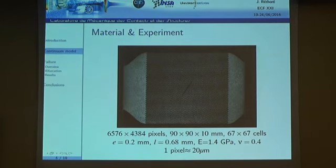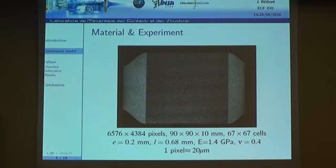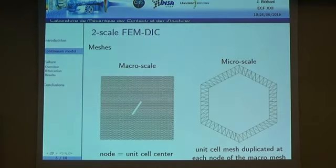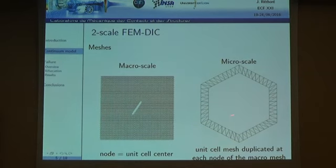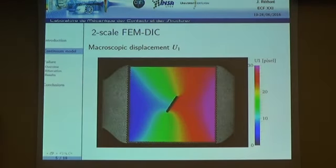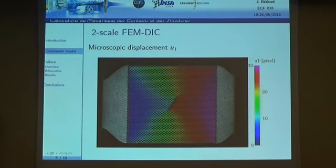In a previous work we performed experiments on such specimens, taking pictures with a high resolution camera to measure the displacement field by DIC at two different scales. We built two meshes: a macroscopic scale with one node per unit cell, and a microscopic scale meshing each unit cell individually. This allows us to measure the displacement field both at the specimen scale and at the unit cell scale, and to analyze how kinematic variables transfer from the microscopic to the macroscopic scale.